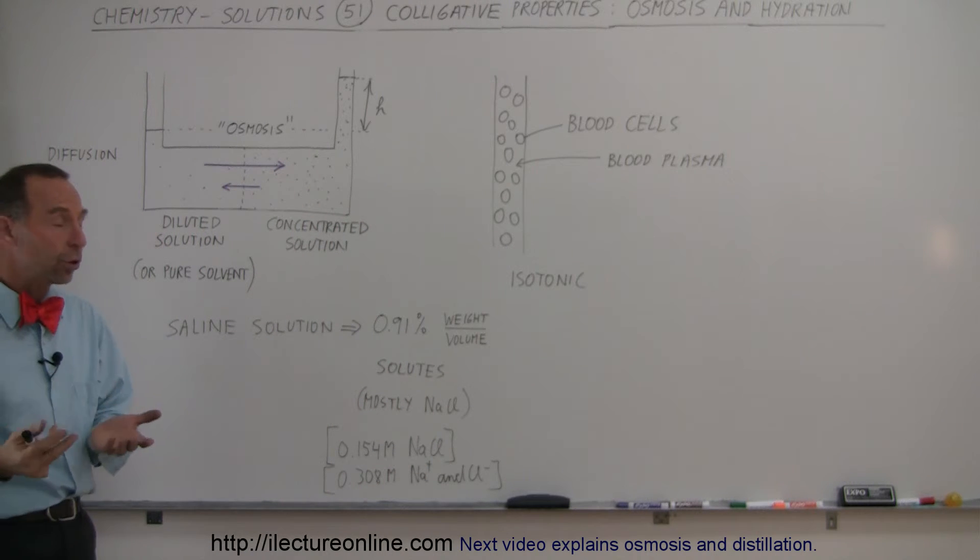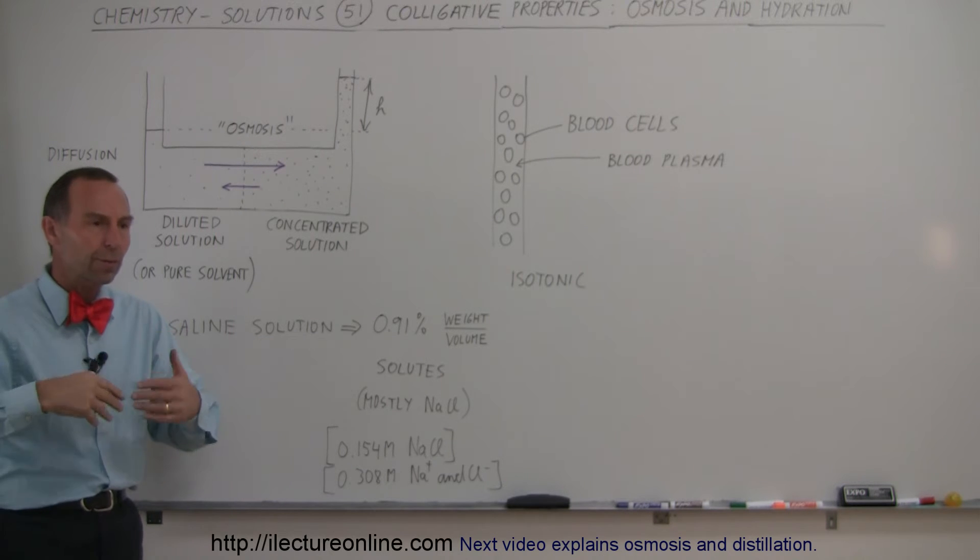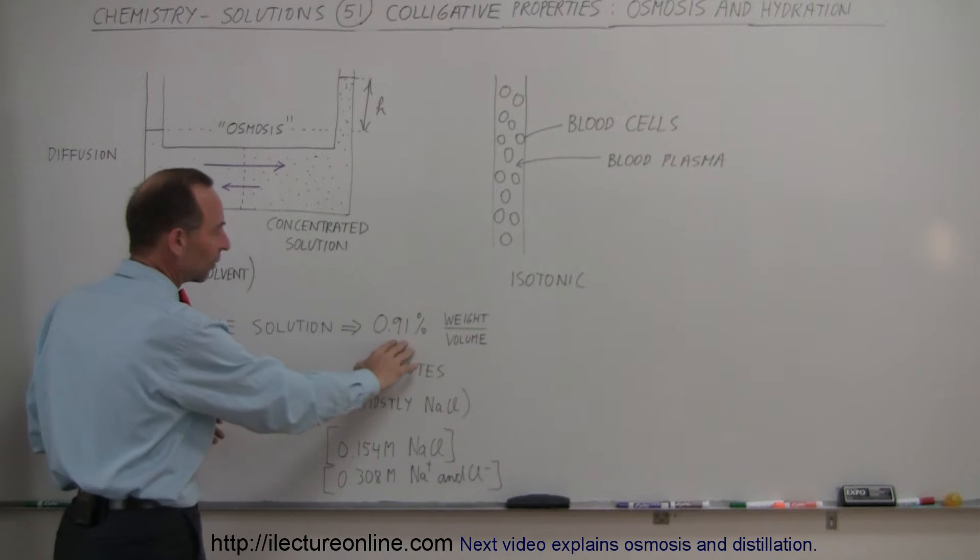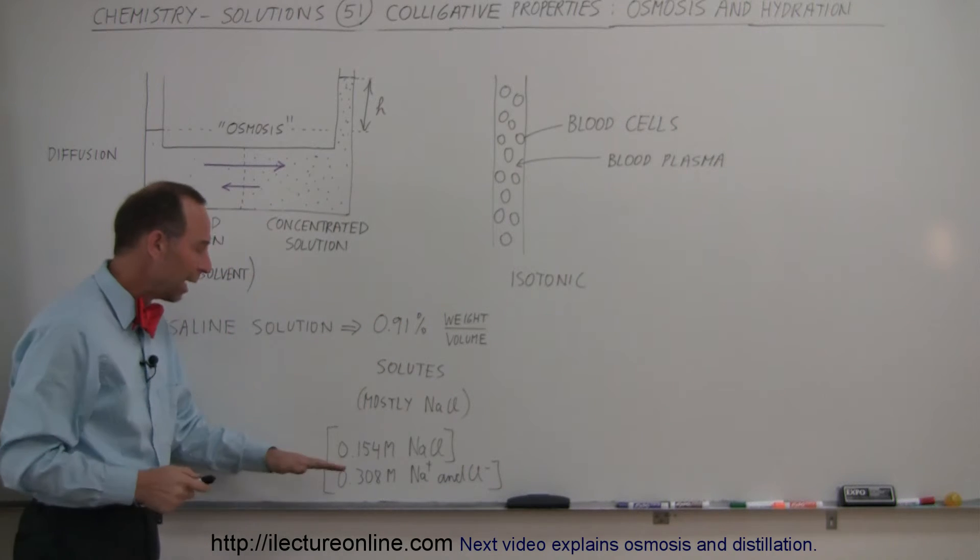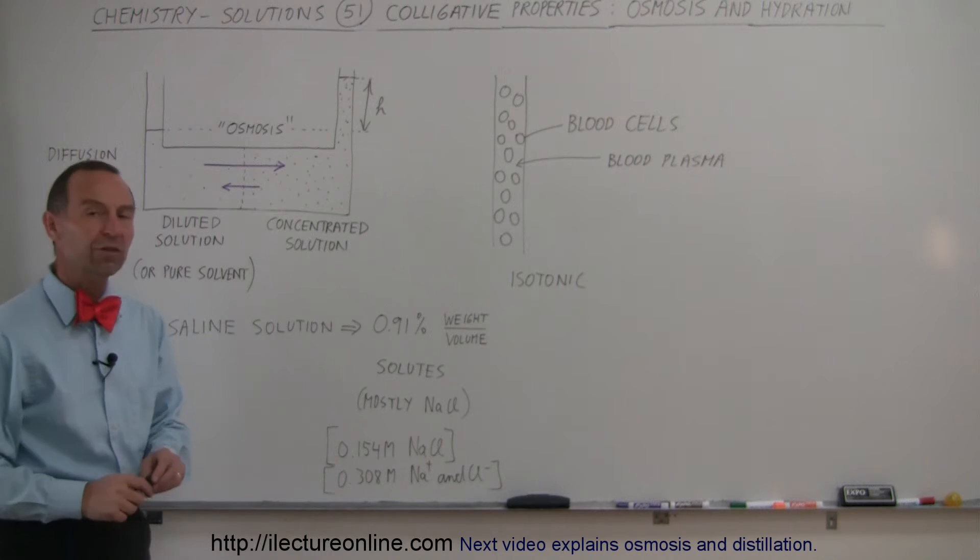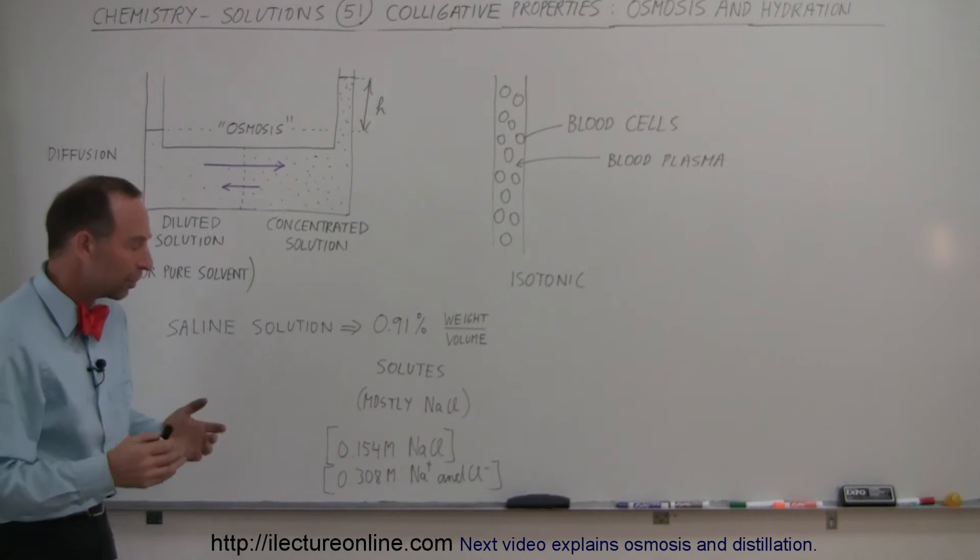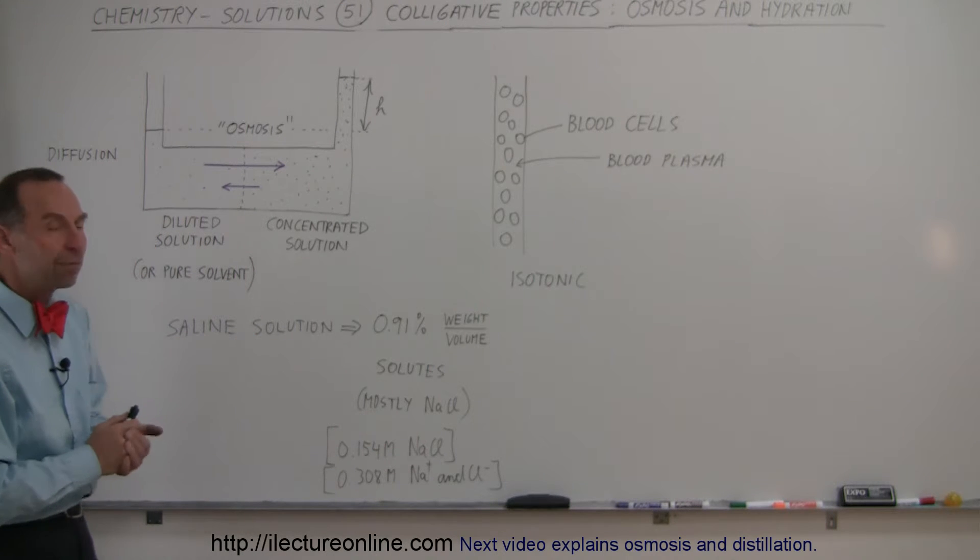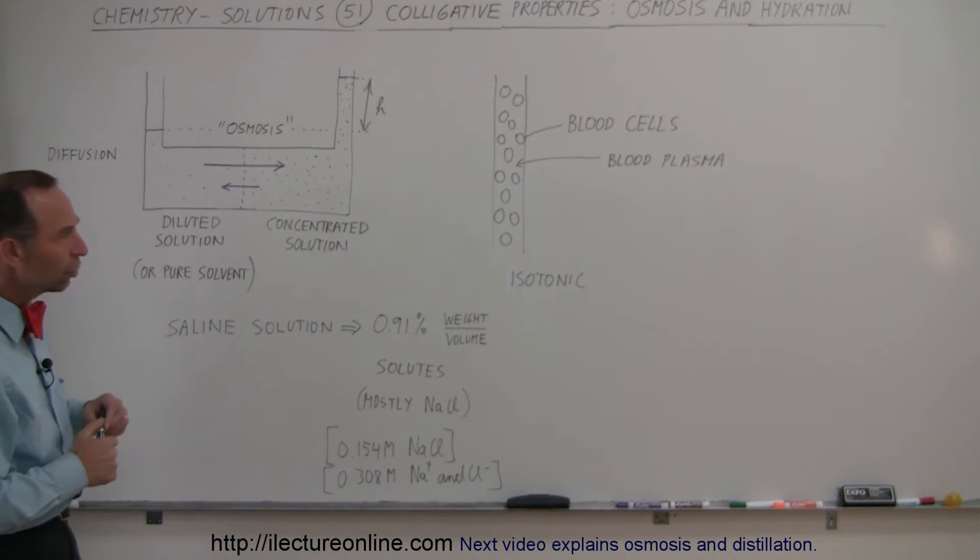That's why when you go to the hospital and need to be given saline solution to remain hydrated, they put a certain amount of salt in the saline solution, about 0.91% weight to volume. That way we have about 0.154 molar concentration of sodium chloride, or about 0.308 molar concentration of ions in the saline solution.